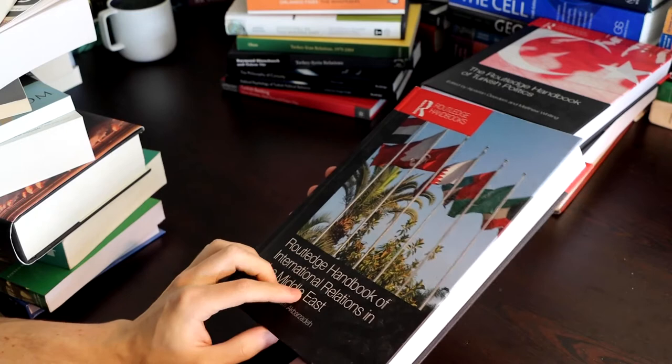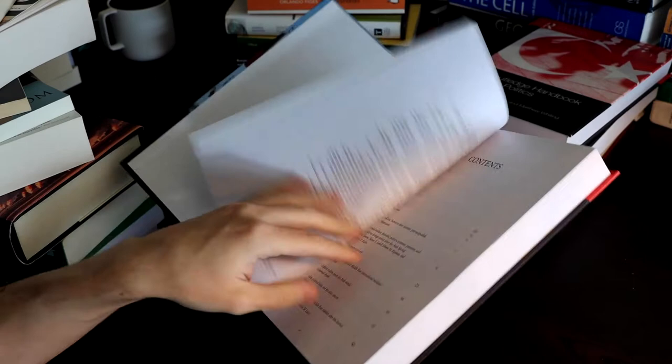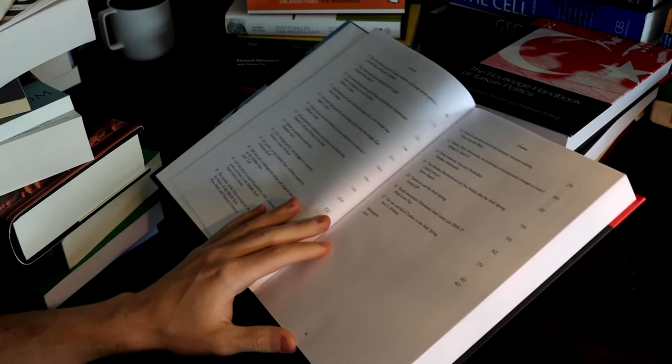Routledge Handbook of International Relations in the Middle East. Again, this will give you a good understanding of how countries relate to one another in the Middle East. Just a good foundational text. If you want to get started on that or when you get introduced to that area, good book to start with.